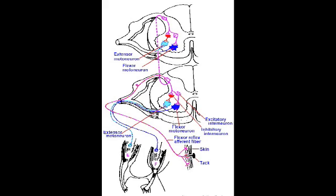As with our stretch reflex, we have a third pathway which travels towards our brain. It allows our brain to process that we have in fact encountered a harmful stimulus, and it's important for further processing as well as recognition that we have withdrawn our limb from a harmful stimulus.